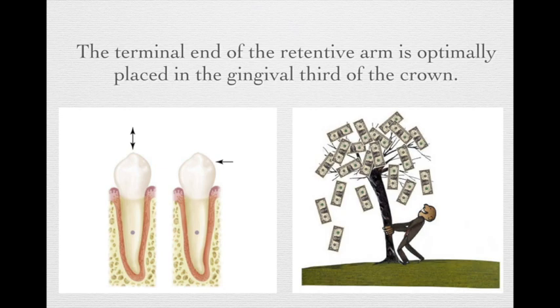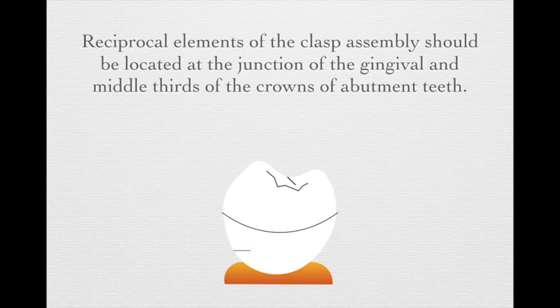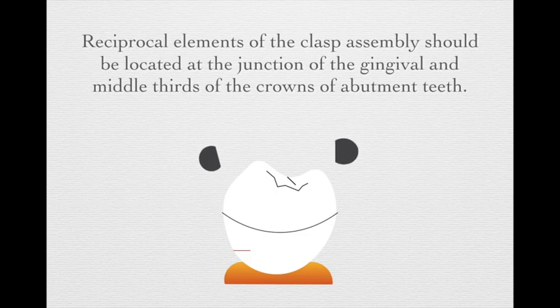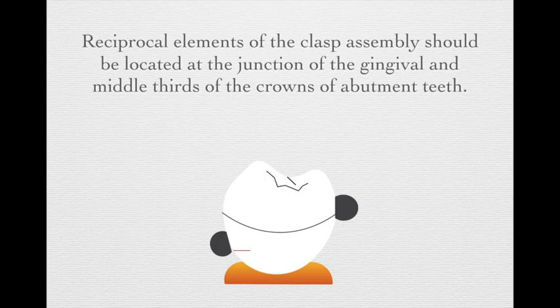Why do we place the terminal end of the retentive arm in the gingival third of the crown? Because the tooth is held by the PDL and the root — when forces are placed closer to the root, torquing forces are minimized. The reciprocal element of the clasp assembly should be located at the junction of the gingival and middle third of the tooth, so when the retentive arm passes through the height of contour, the reciprocal arm is already on the opposing side to hold the tooth.